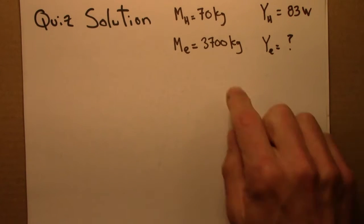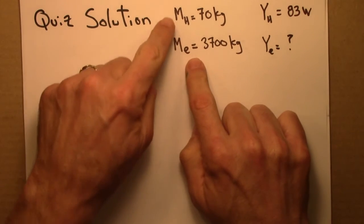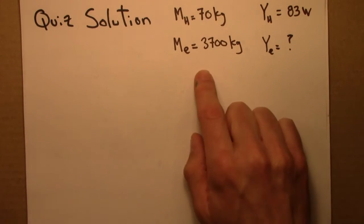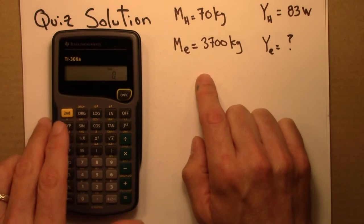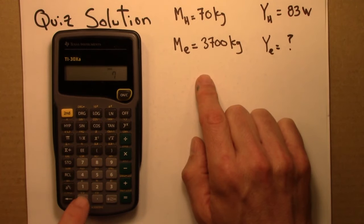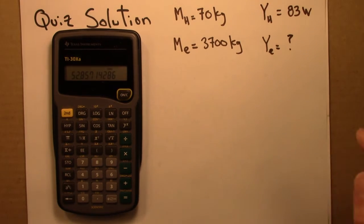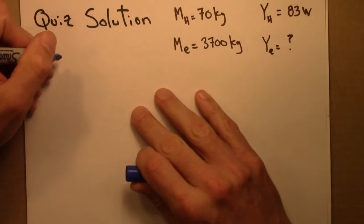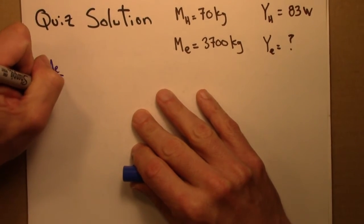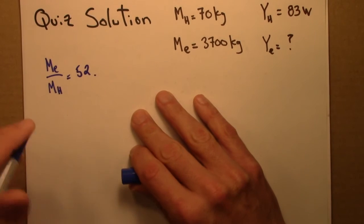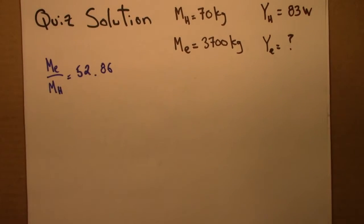Alright, so first let's figure out by what factor mass is going up by. How many more times massive is the elephant than the human? And so let's do some division. 3,700 divided by 70, and let's see, 52.86. Okay, so that means that ME over MH is 52.86.